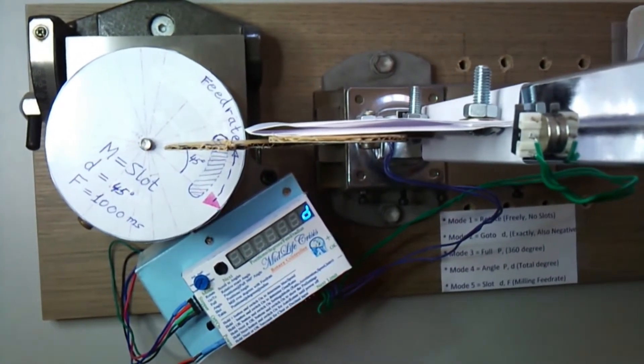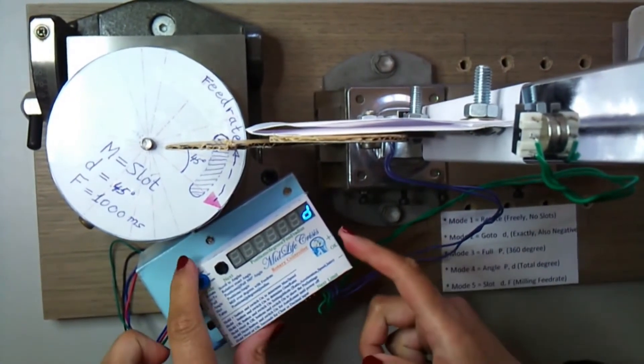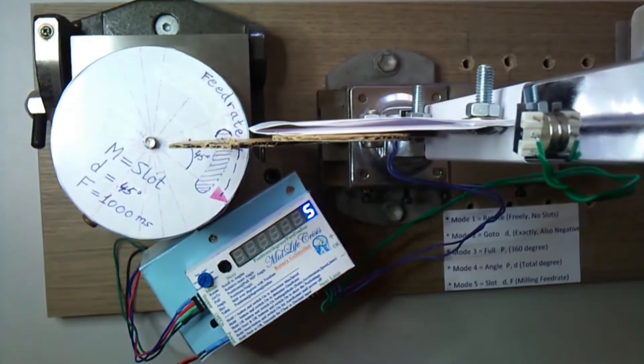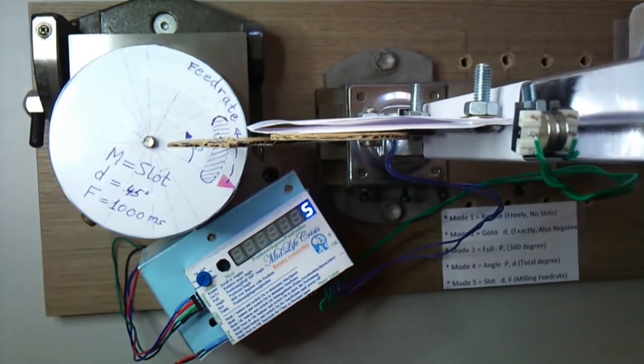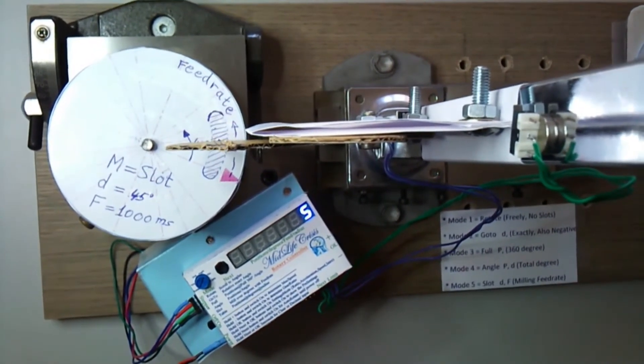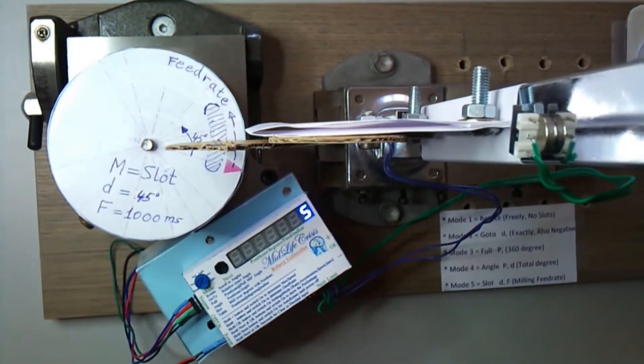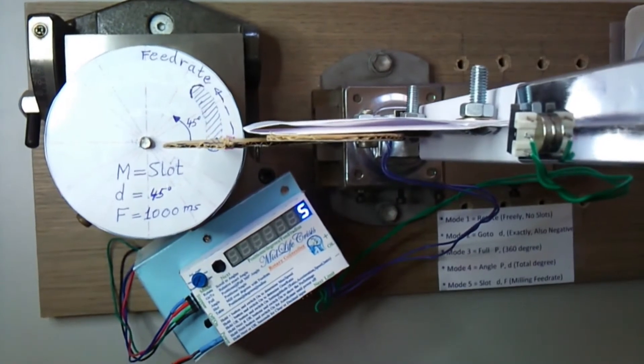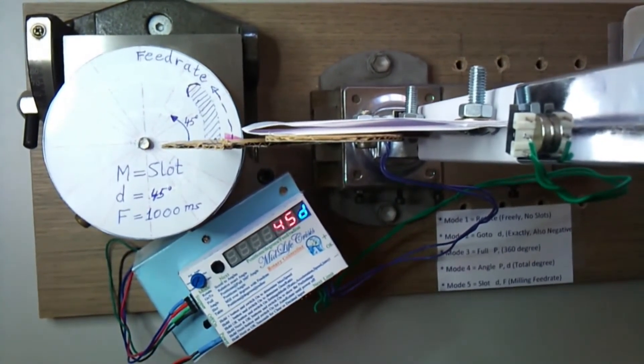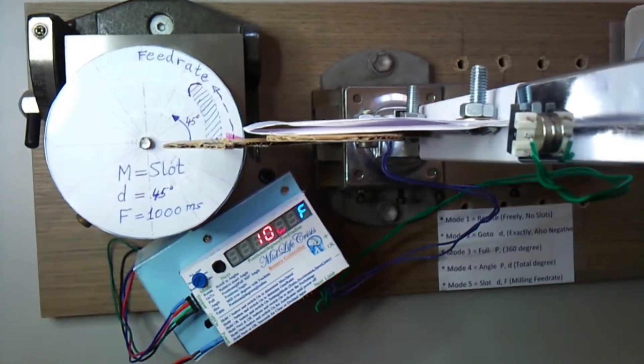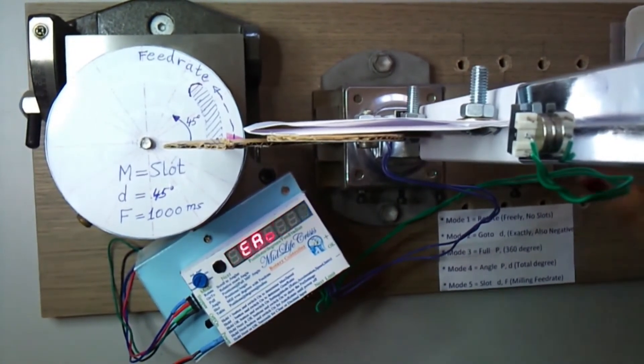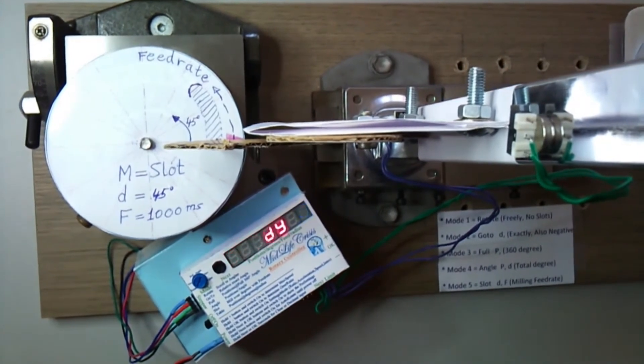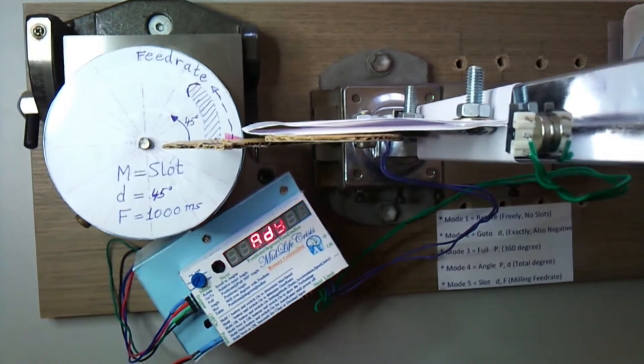We have to go back to the zero position. We accept the previous value by OK. Now we press next to return. Now it will give the previous values. We lower the mill a little bit further and press next to start milling the slot a second time deeper.